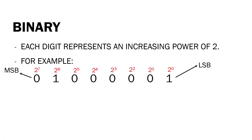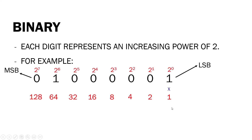Two raised to zero is equal to one — any number raised to zero is equal to one. Then two raised to one, or two times one, is equal to two. Two raised to two, or two times two, is equal to four. Two raised to three, or two times two times two, is equal to eight. Two raised to four is equal to 16, two raised to five is equal to 32, two raised to six is equal to 64, and two raised to seven is equal to 128.